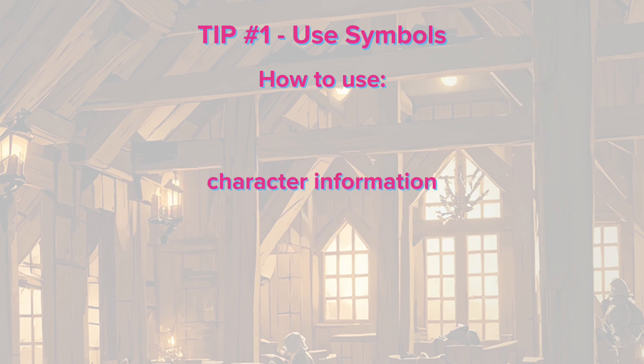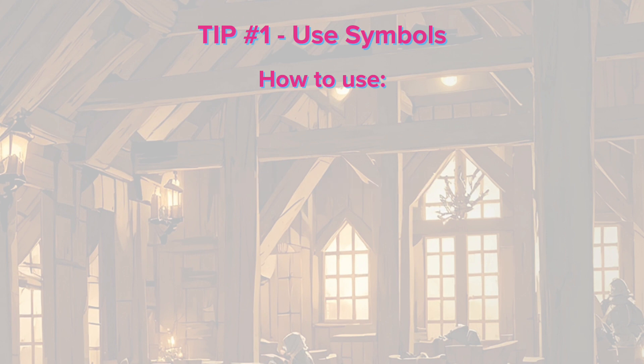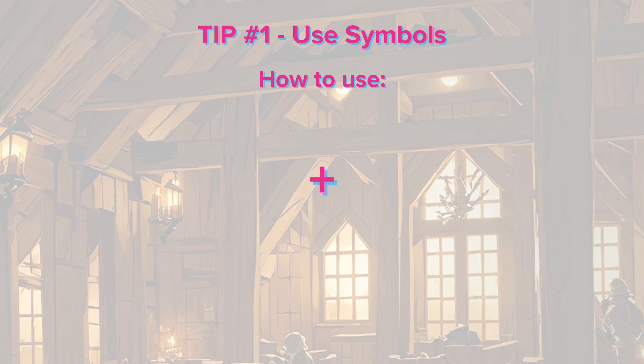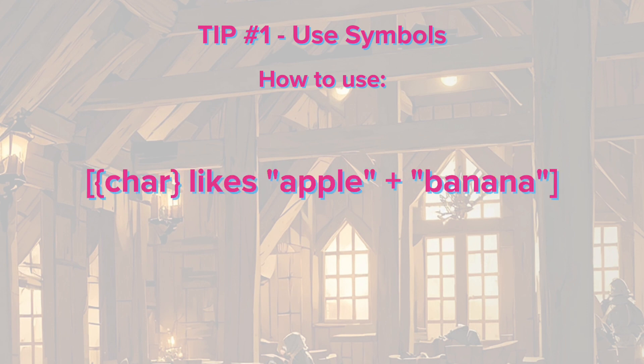In simple terms, begin and end with square brackets like this. For each section where you'll include character details, you can use curly brackets and parentheses to group the details for what you want to describe. Every time you use brackets or parentheses to start a section, don't forget to close them with the same one you used. The plus sign is a very helpful symbol used to separate various specific details like this.